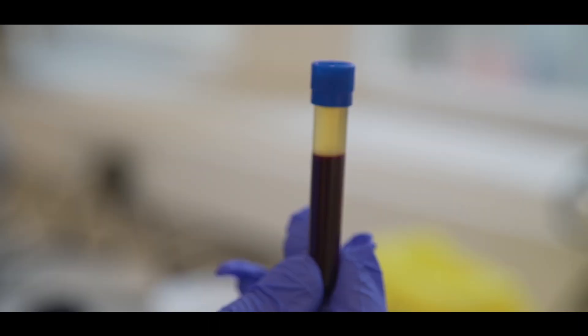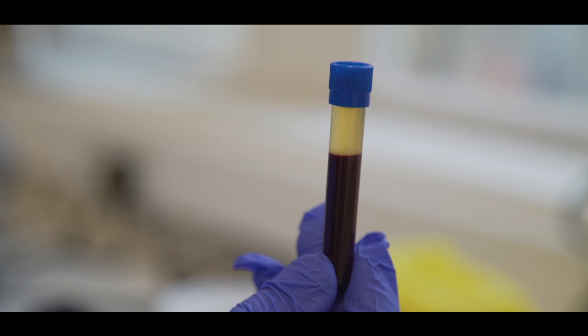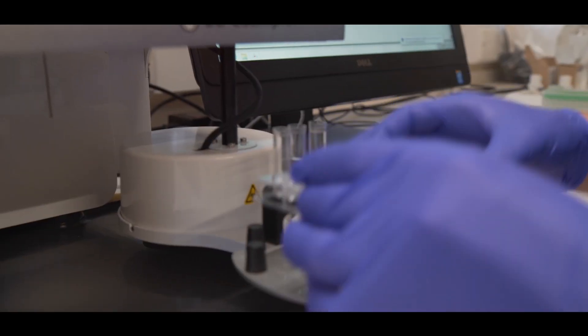You should see that the heavier red blood cells have gone to the bottom of the sample whereas our platelets and our plasma are at the top.